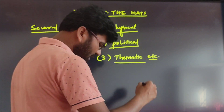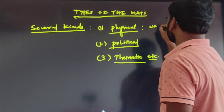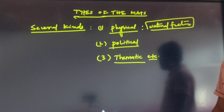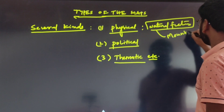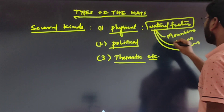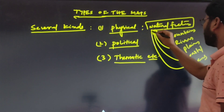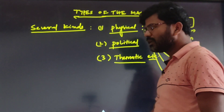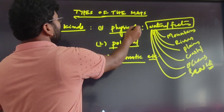Physical maps are maps that show the natural features or physical features of the earth. These physical features include mountains, rivers, plains, coastal areas, oceans and seas, etcetera. Maps that indicate these different physical or natural features are called physical maps.